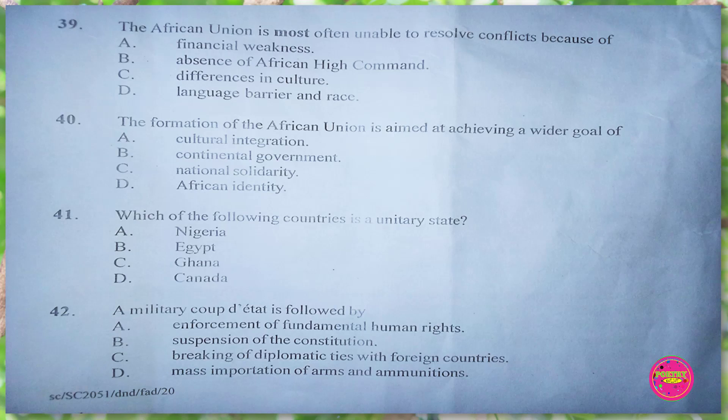Question 41. Which of the following countries is a unitary state? A. Nigeria, B. Egypt. The correct answer is B. Egypt.